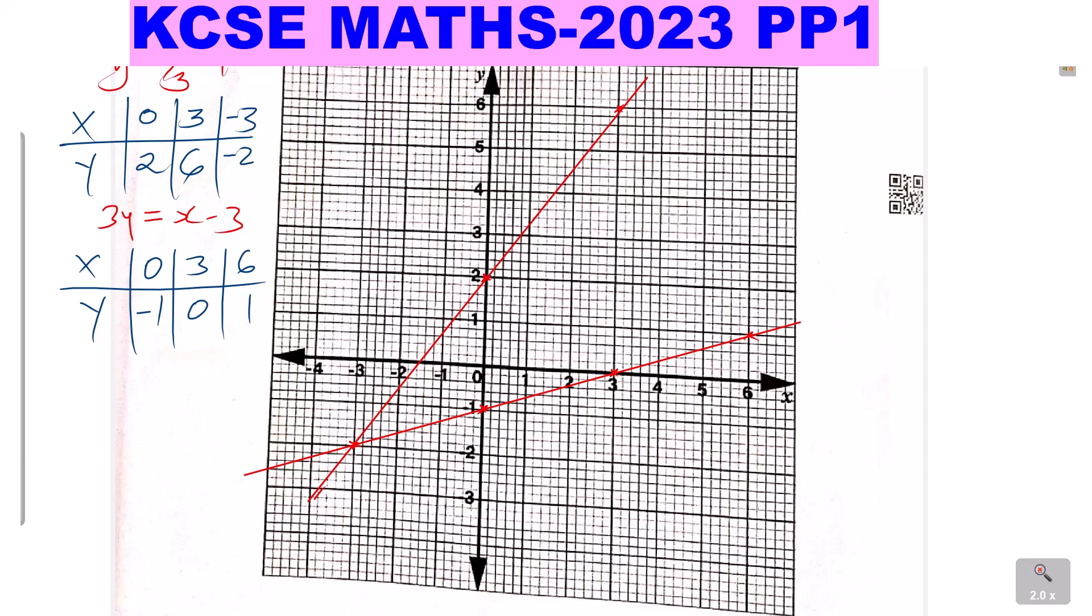So those are the two lines. So we have this line, y is equal to 4/3x plus 2. And we have this one, 3y is equal to x minus 3.